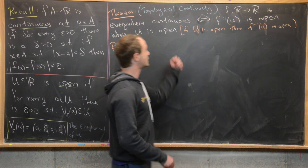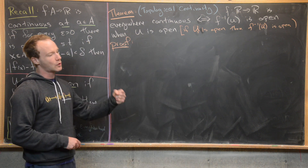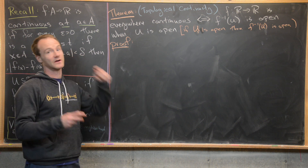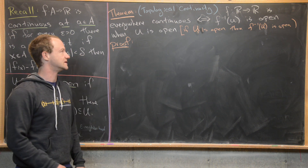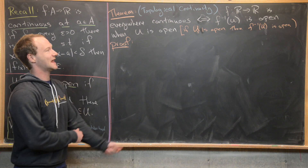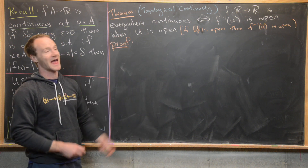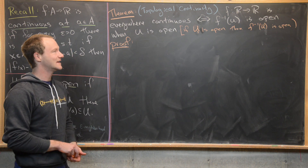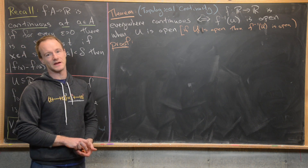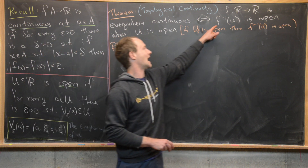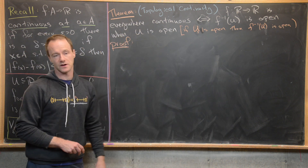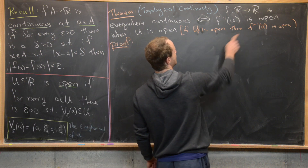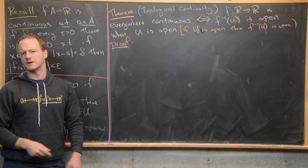The classic theorem we're going to prove is the equivalence of the topological notion of continuity and the real analytic notion of continuity. It states that if f is a function from ℝ to ℝ and it's everywhere continuous, that is equivalent to the inverse image of every open set being open — in other words, f inverse of U is open whenever U is open.